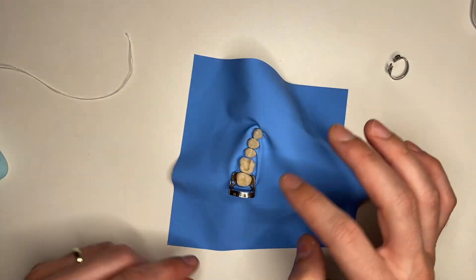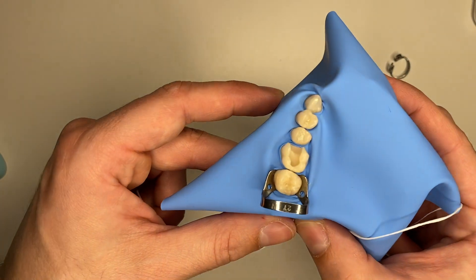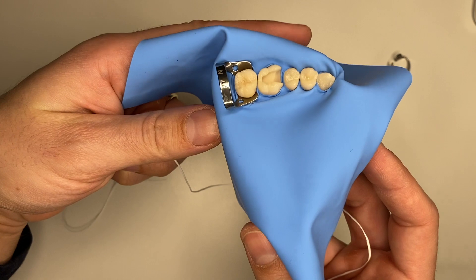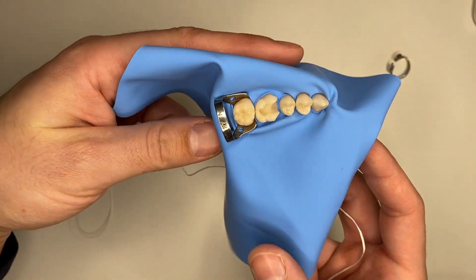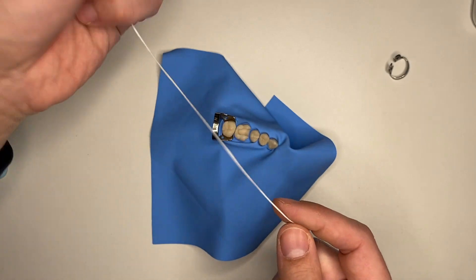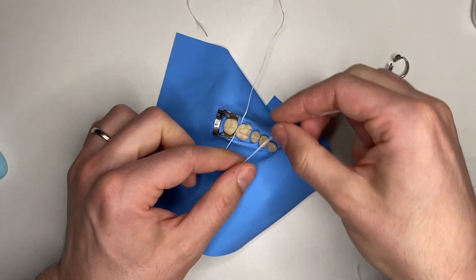Now you see the rubber dam seems to be crumpled here and there. I don't want this. This is not going to provide proper isolation. What I want to do is use my floss again, and I'm going to go around each tooth like this.